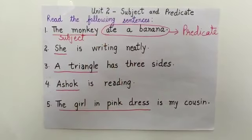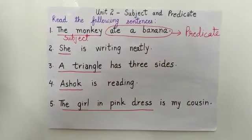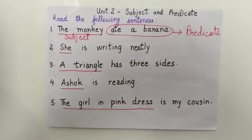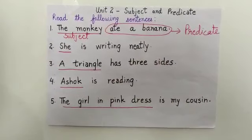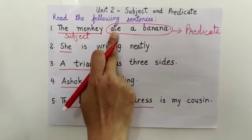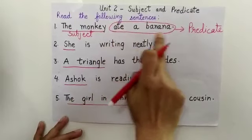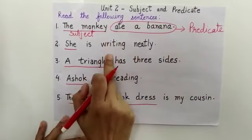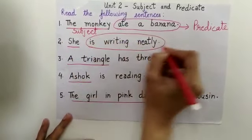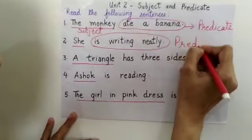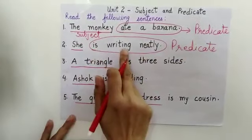Now, what is the verb here? Verb is a part of the predicate. The verb could be an action word. Like 'ate' — ate is an action word, it is a verb, and it is part of the predicate. Here in the second sentence, 'is writing neatly' is the predicate. And the verb here is 'is writing'.